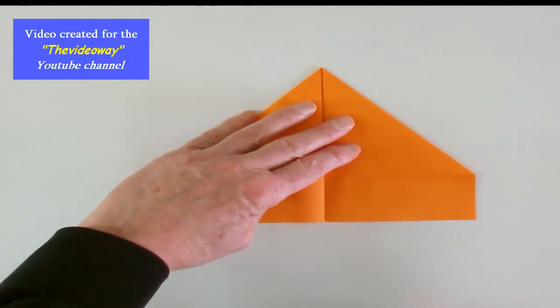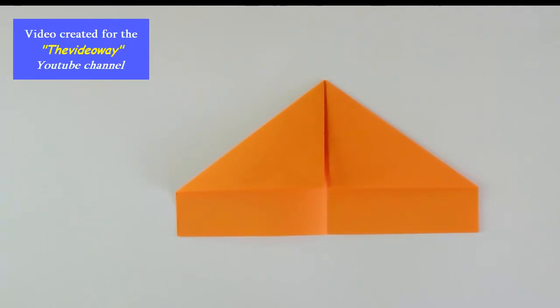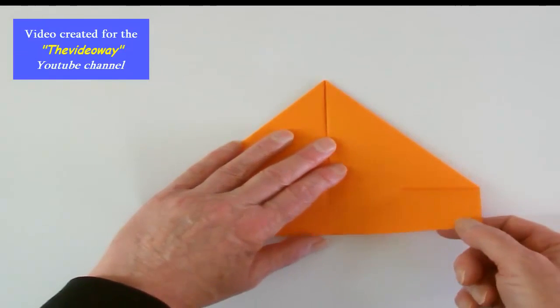Now rotate the paper. At the bottom there are two flaps. We take the top flap and fold it up to the line.